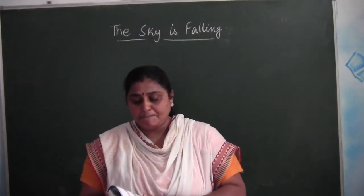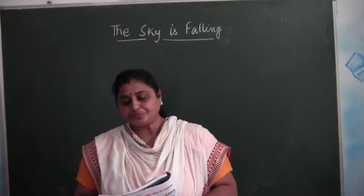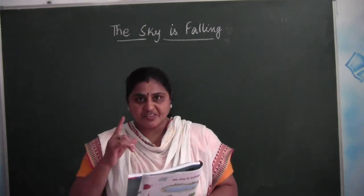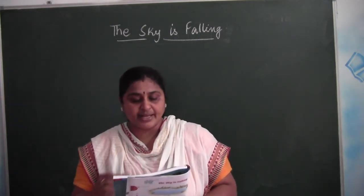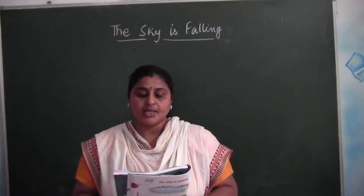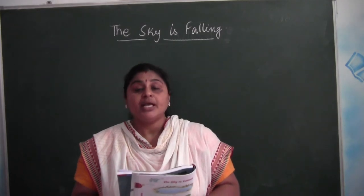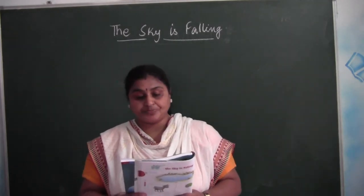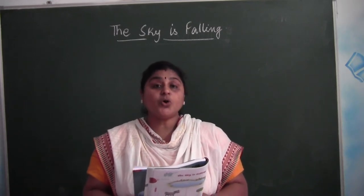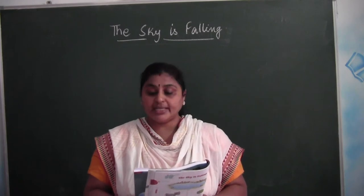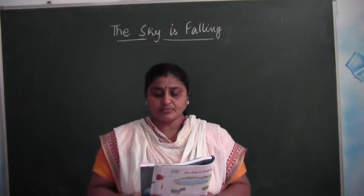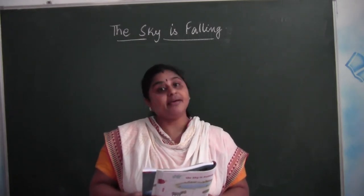Be ready with your textbooks at page number 27. Now let us discuss. 'The Sky is Falling.' Now the narrator — me — I am telling: a rabbit lived in a jungle. He liked to hop, he liked to smell the flowers, he liked to hear the birds sing. One day he was resting under a coconut tree. A coconut fell from the tree on the ground below. It made a loud thud. The rabbit was scared and ran.